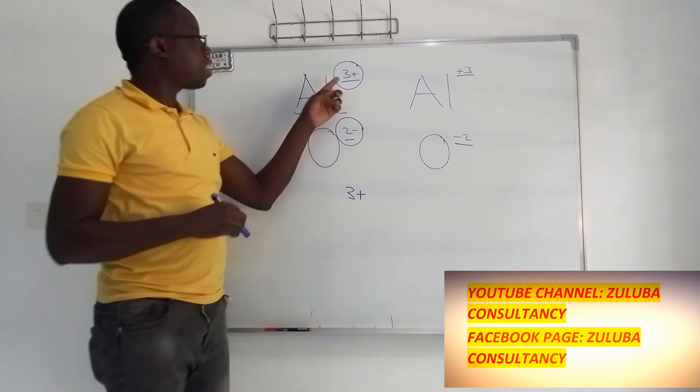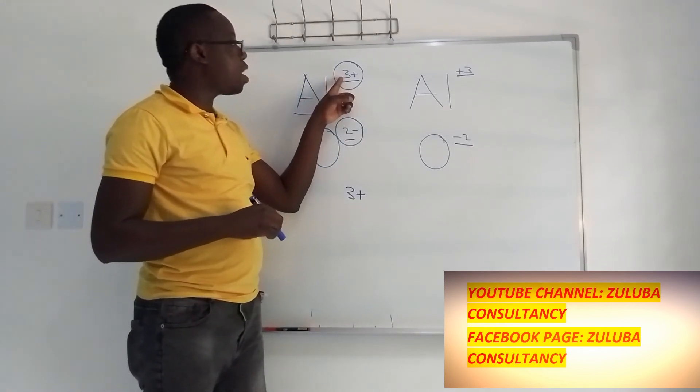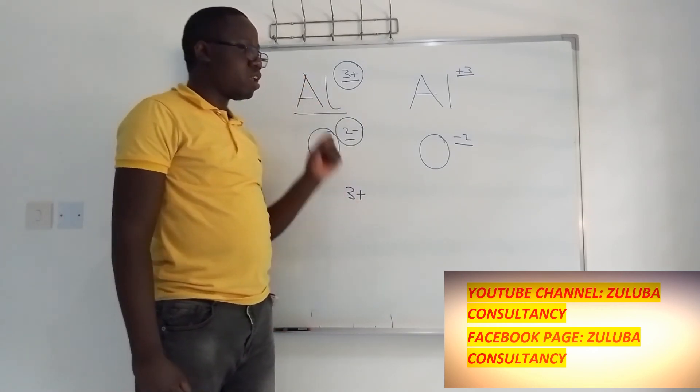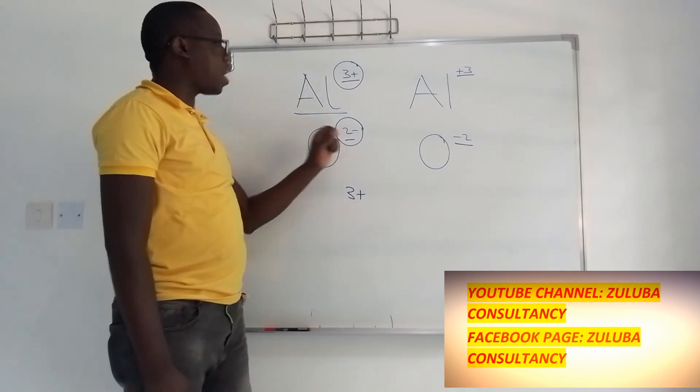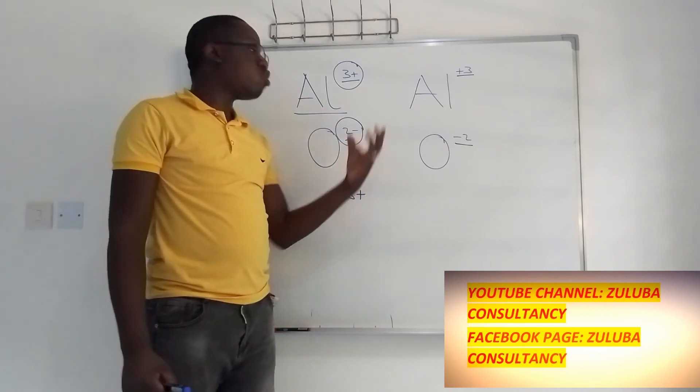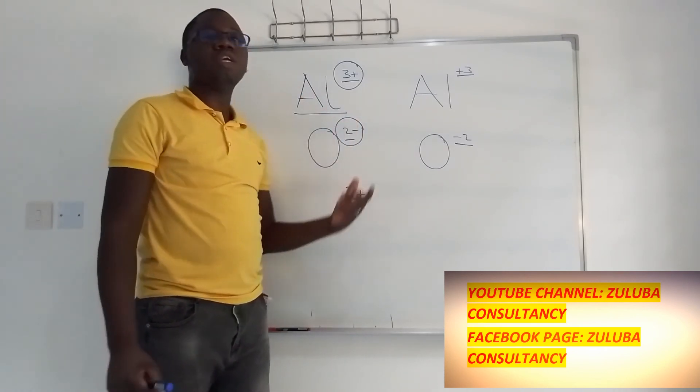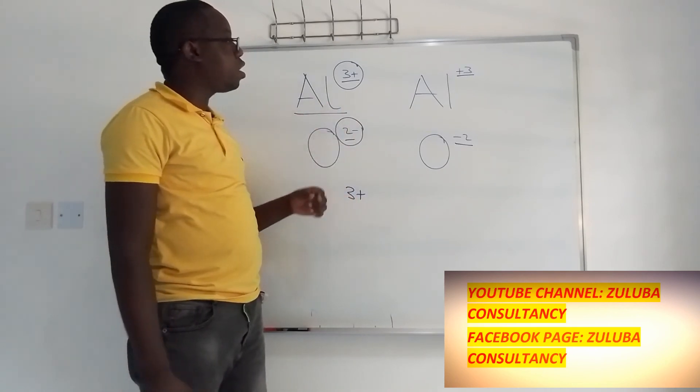When it starts with the number, then the charge, then just know that this is the ionic charge. So hopefully you have now understood the difference between the oxidation number and the ionic charge.